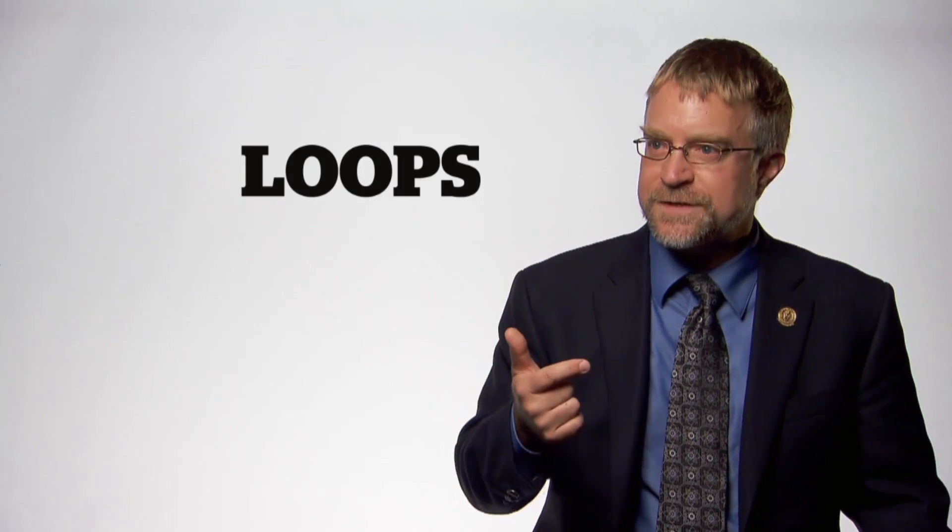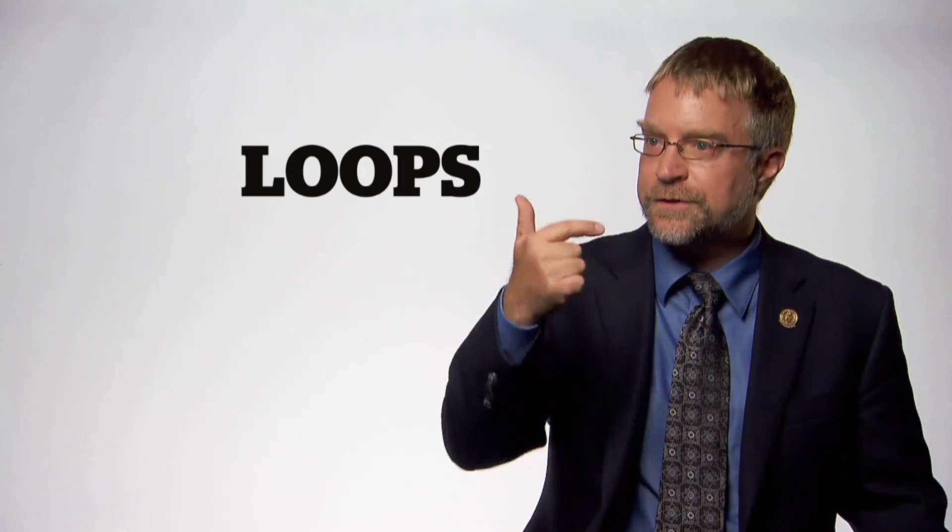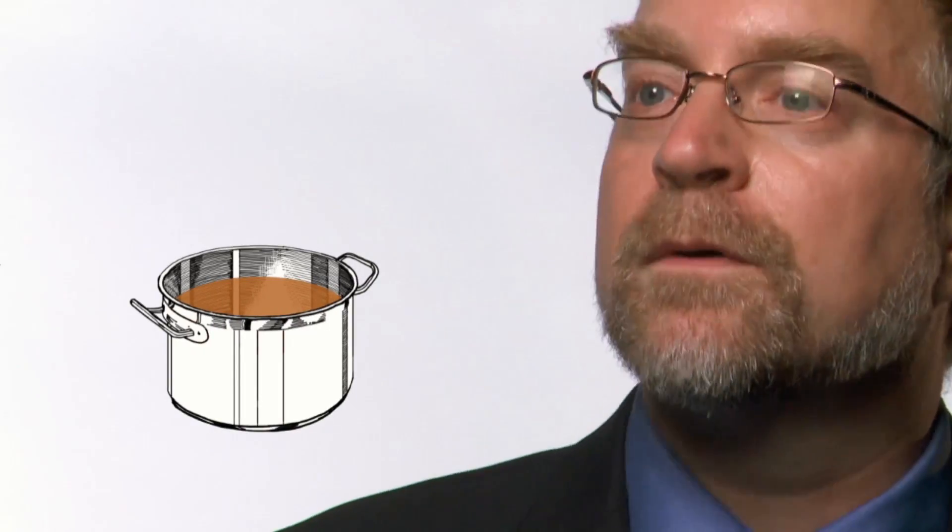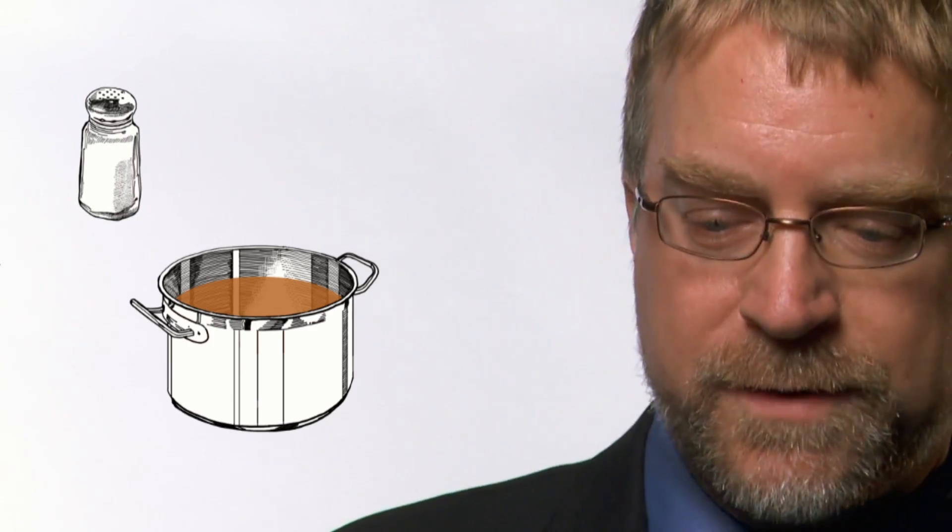A loop is a sequence of instructions that gets repeated until you reach a desired state. Let's say you have soup that you're cooking and the recipe says salt until you've reached the flavor that you want. So what you do is you add a little bit of salt, you stir, you taste, you add a little bit of salt, you stir, you taste. And you keep doing this until the soup tastes right. That's a loop.